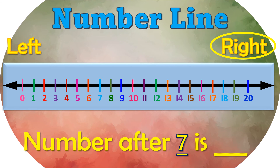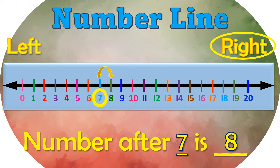What's the number after 7? First, we circle 7 on the number line. Then we look at the number next to it at the right side. So the answer is 8.